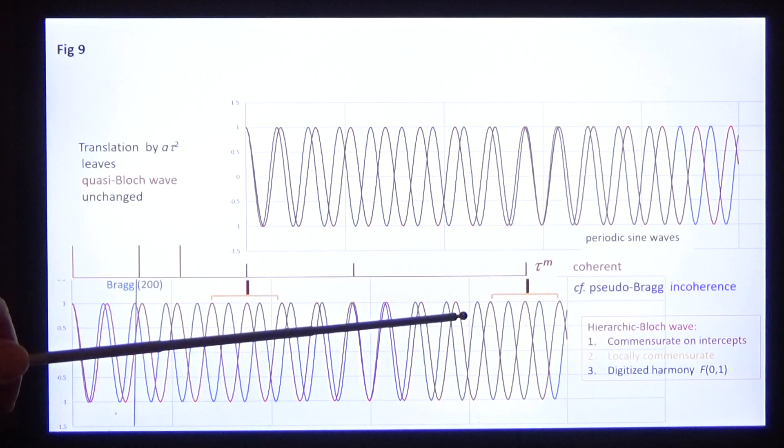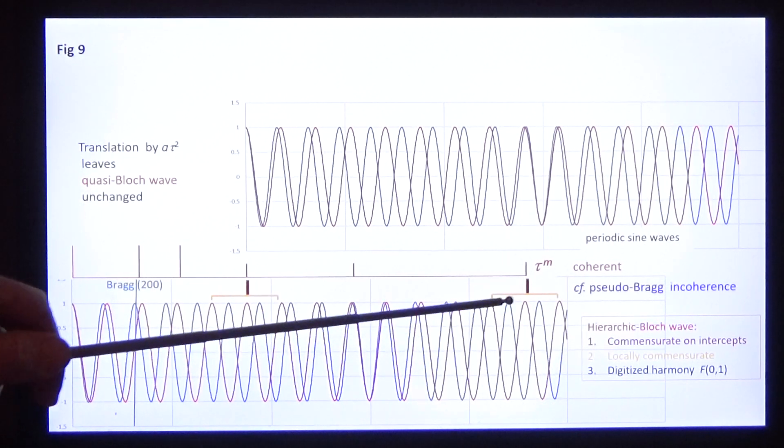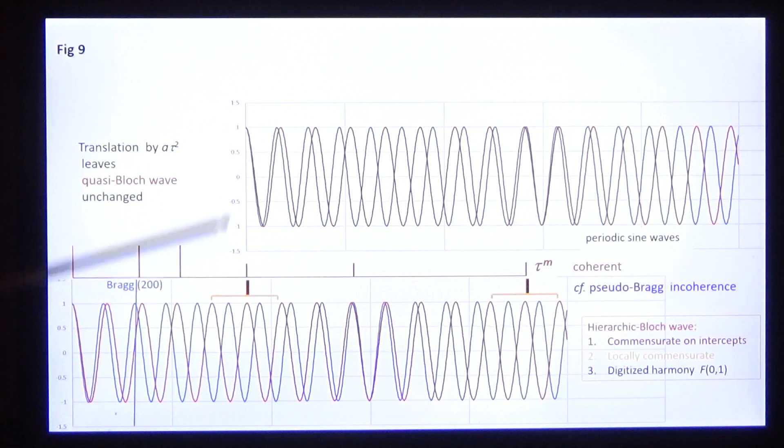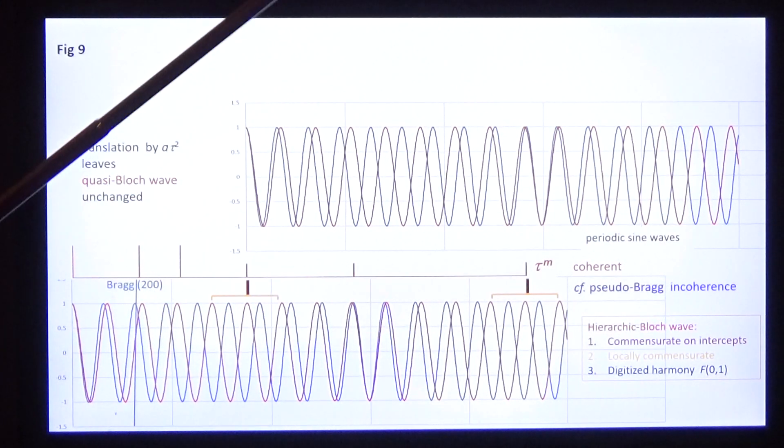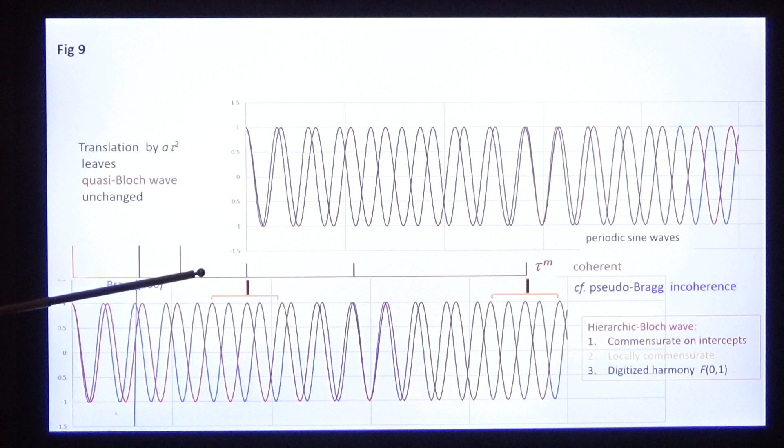It has further properties. Count the indices, count the cycles: 1, 2, 3, 4, 5. Notice 1, 2, 3, 5, 8, 13, 21, 34. Therefore, this is the Fibonacci sequence that we saw in the denominator of the metric function. Notice one other feature: this quasi-blockwave is invariant under all translations at tau to the power n.